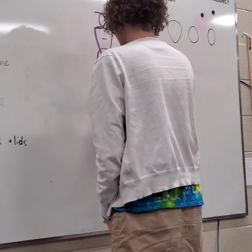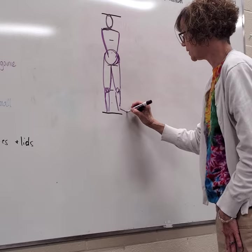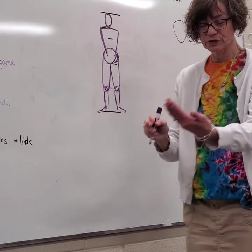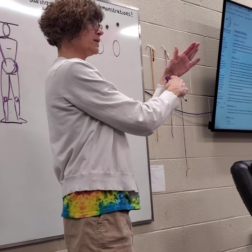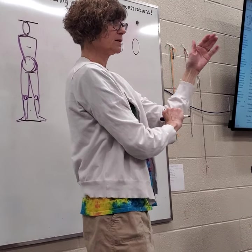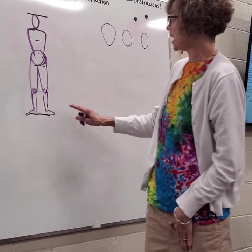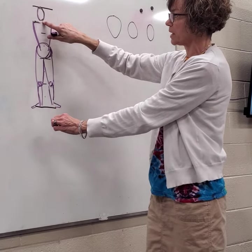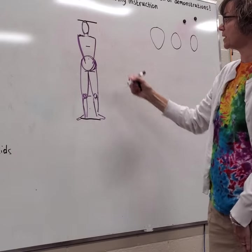Everything is proportional — the measurement from your wrist to your elbow equals your foot size. So make sure the feet are substantial; a lot of times people draw tiny little feet that don't support the height of the body. I'm going to put a little neck in here as well.